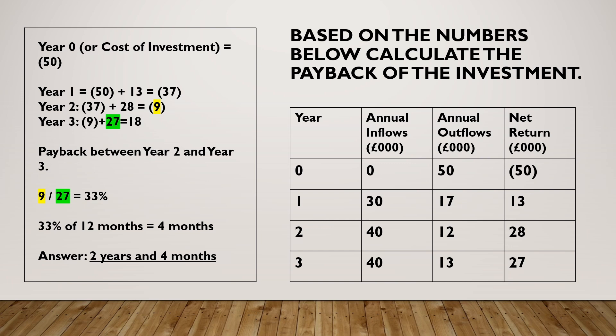Convert that into months: 33.3% of 12 months is 4 months, because a third of a year is 4 months. So the answer is 2 years and 4 months. I hope that helps and I'll see you at the next session.